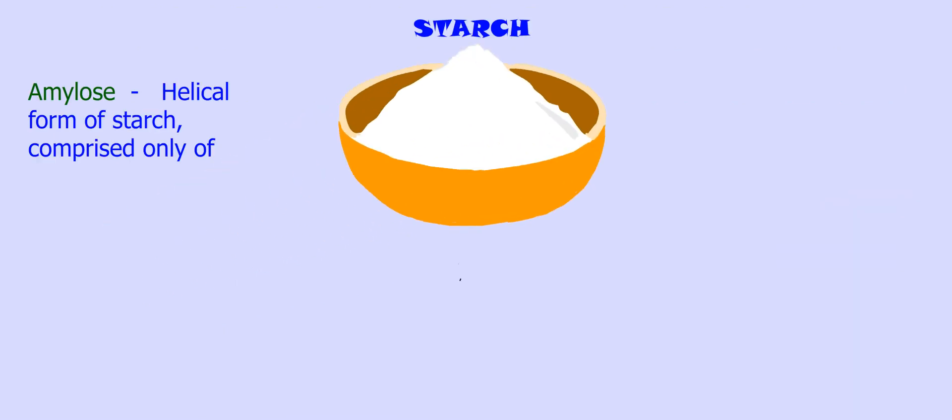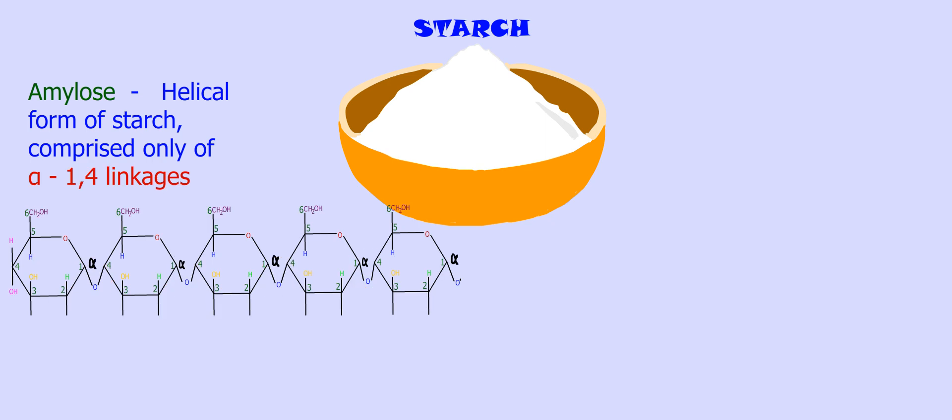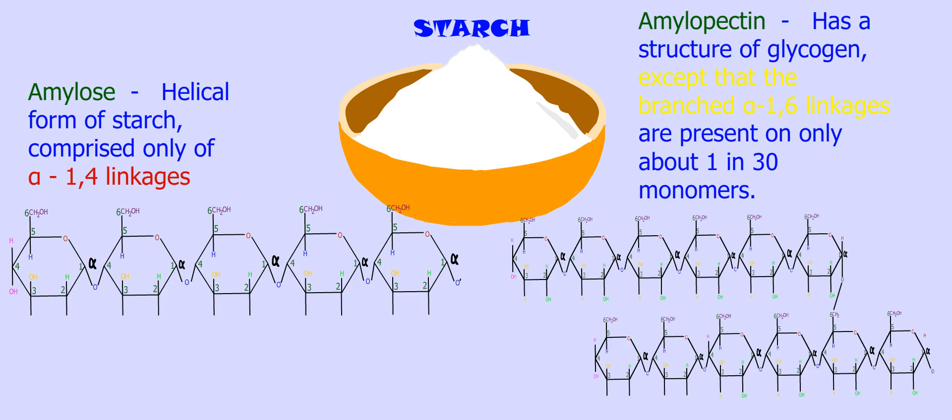Starch exists in two forms. Amylose is the helical form of starch comprised only of alpha-1,4 linkages. Amylopectin has a structure like glycogen, except that the branched alpha-1,6 linkages are present on only about 1 in 30 monomers.